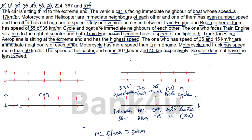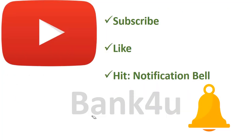Motorcycle is more than 50 km/h and truck is also more than 50 km/h — both confirmed. This is the final arrangement. It takes a little more effort compared to normal questions, which is why I always suggest doing more practice so you can crack it in the actual exam. Thank you so much for watching. Please subscribe to the channel, like the video, share it with your friends, and if you have any doubts, let us know in the comments below. Have a good day!